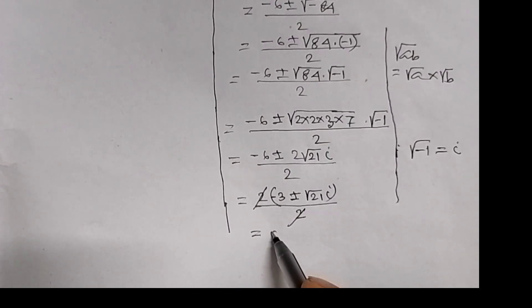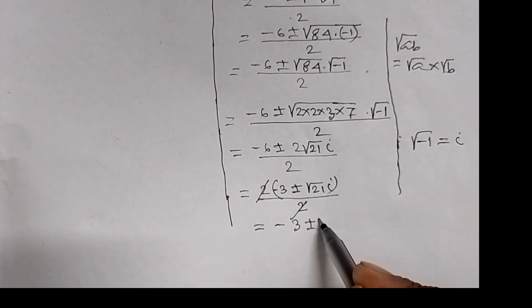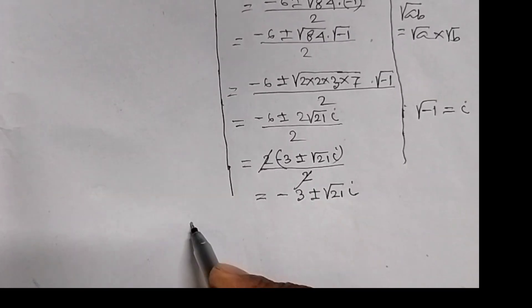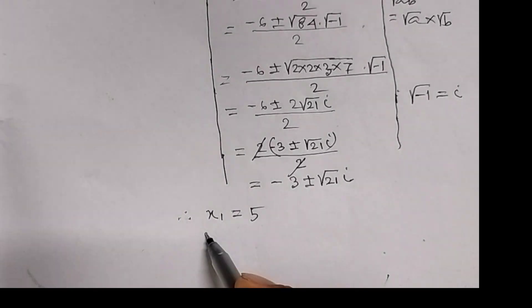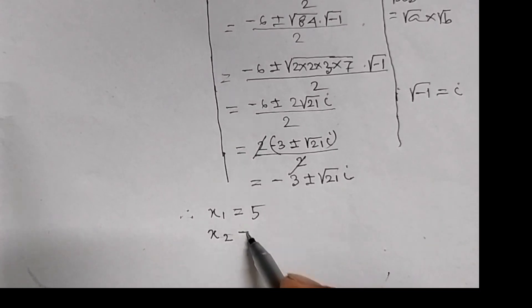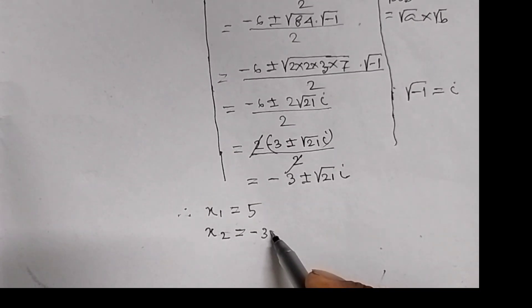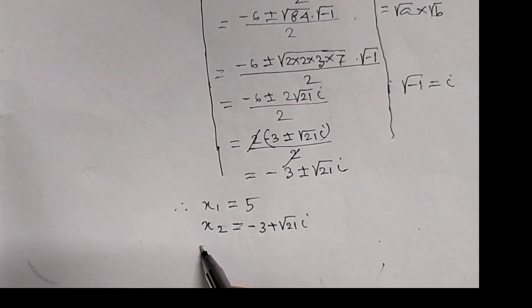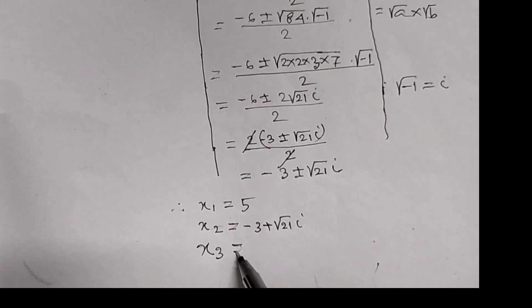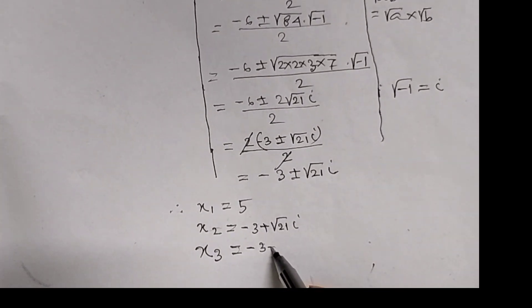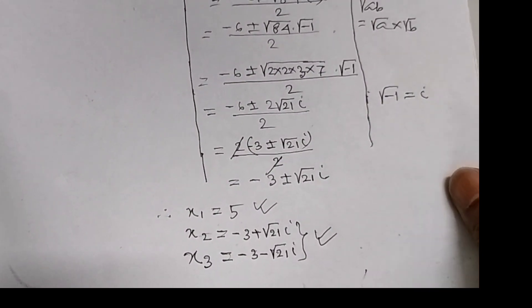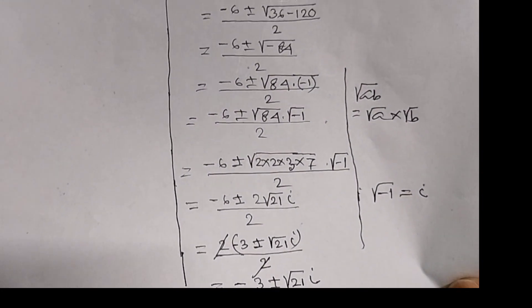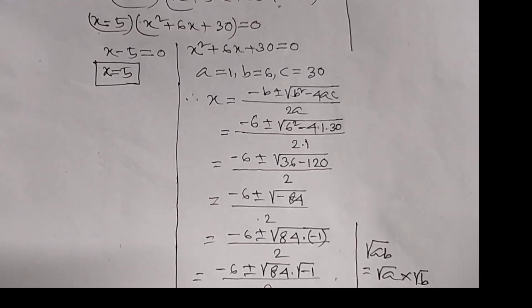Equal to minus 3 plus minus square root of 21 i. Therefore we can say x1 equal to 5, x2 equal to minus 3 plus root of 21 i, x3 equal to minus 3 minus square root of 21 i. This is the only real root of the given equation and these are the imaginary roots of the given equation. Please like, share and subscribe my channel if you like my videos. Thank you.